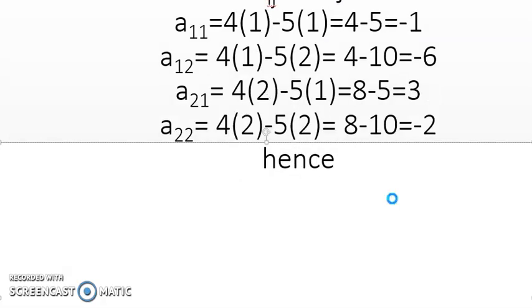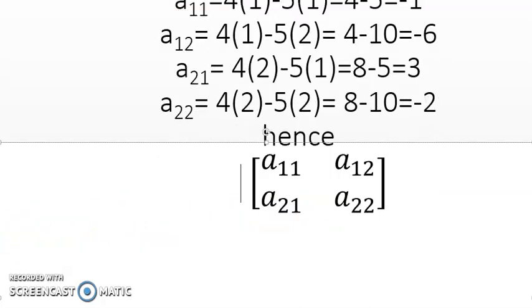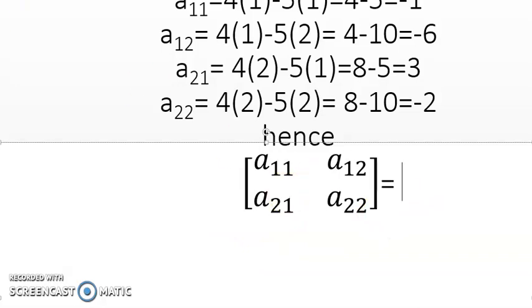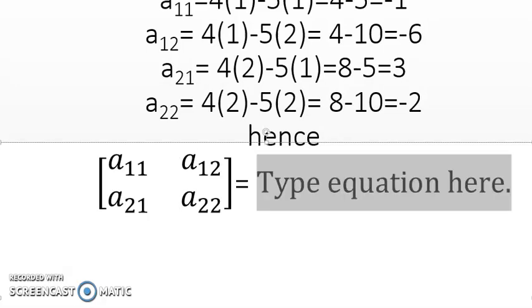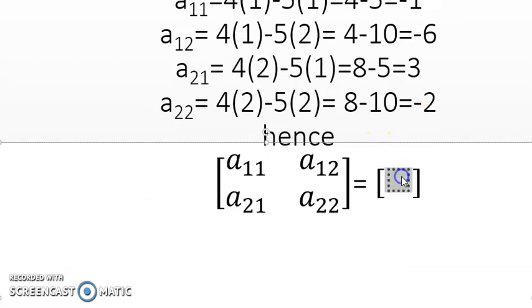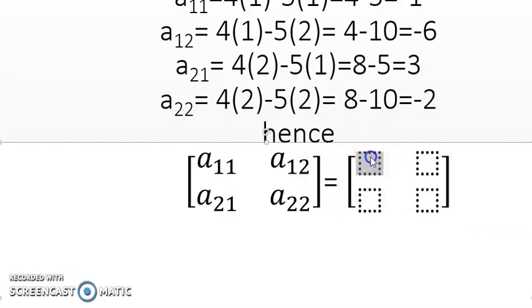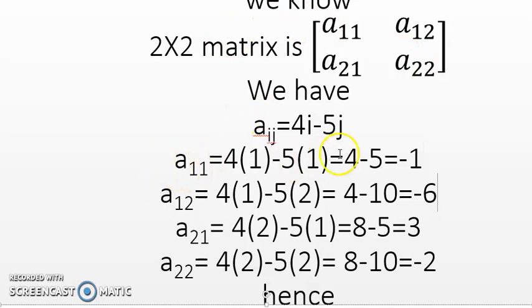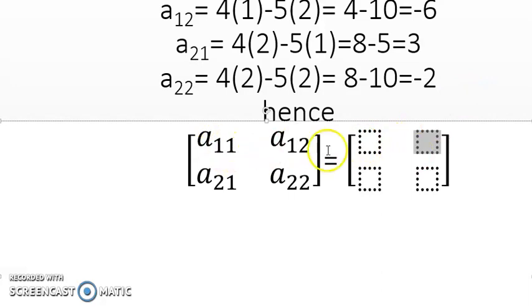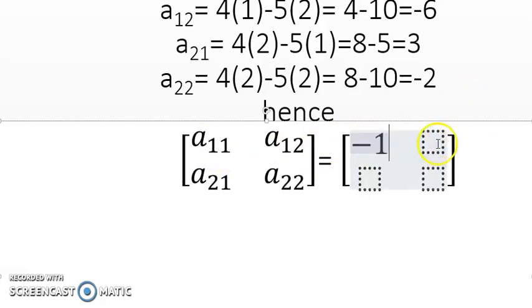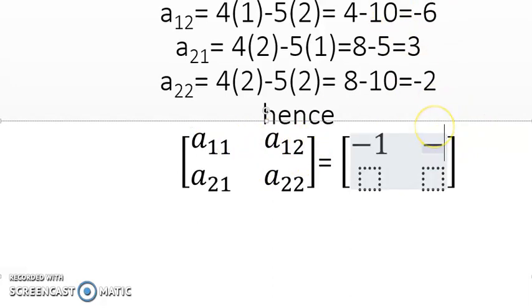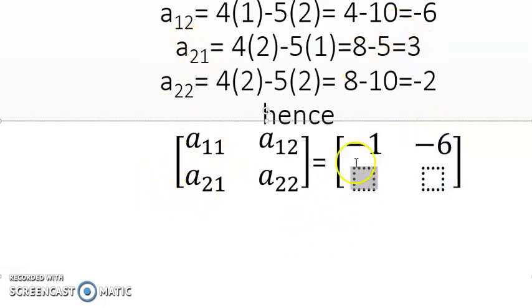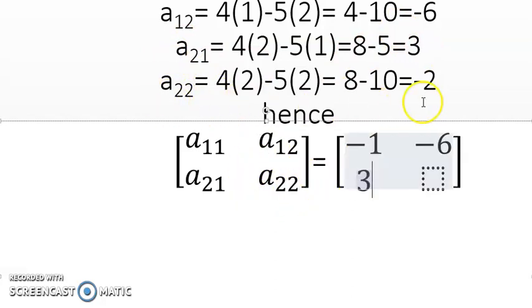So now finally, let's see here what is the value of a_11. a_11 is minus 1, it places here. Then a_12 is minus 6, a_21 is 3, and finally a_22 is minus 2. So hope you got it and please like it, share it, and subscribe to my channel. Thank you so much, I'll see you next video.